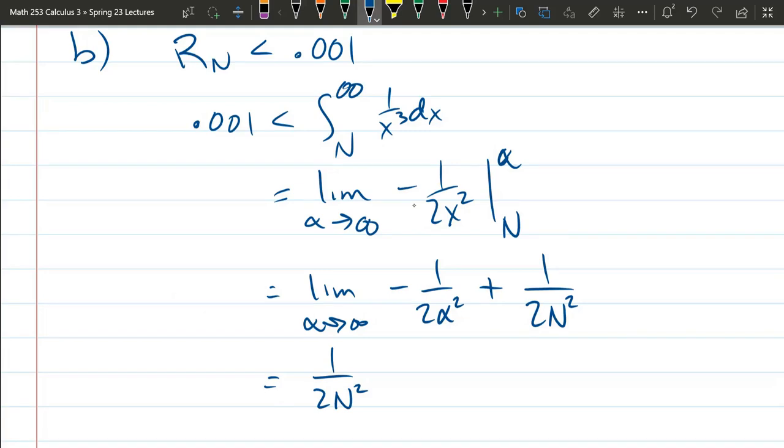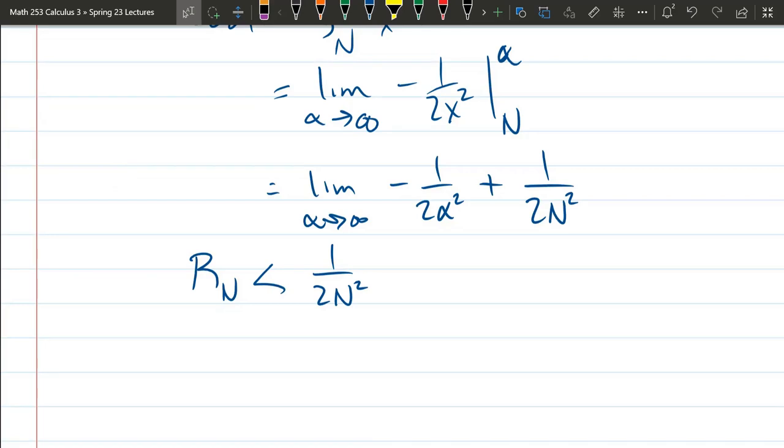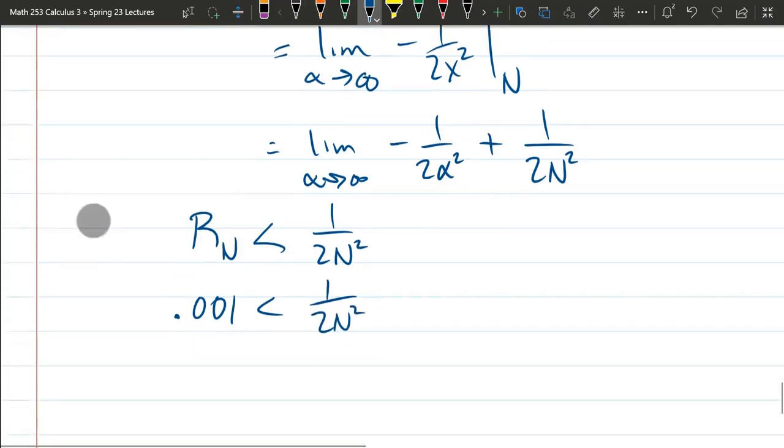And we need this to be, we want the error less than that. N squared. So Rn is less than that number. So we're going to replace Rn by that number.